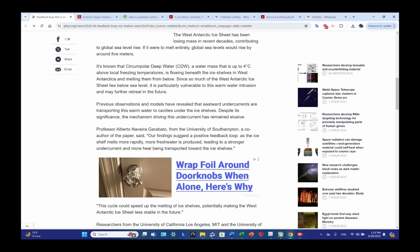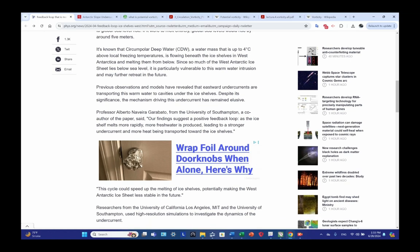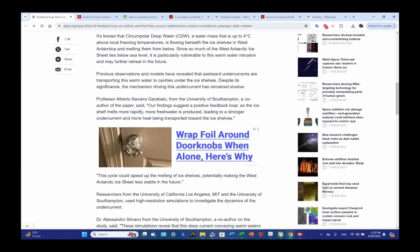It is known that the circumpolar deep water, abbreviated CDW, a water mass that is up to 4°C above local freezing temperatures, is flowing beneath the ice shelves in West Antarctica, melting them from below. Since so much of the West Antarctic ice sheet lies below sea level, it is particularly vulnerable to this warm water intrusion and may further retreat in the future.